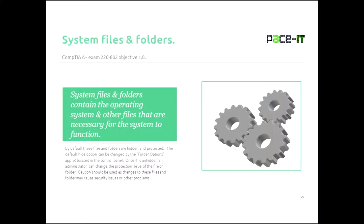System files and folders contain the operating system and other files necessary for the system to function. By default, system files and folders are hidden and protected. You can change that from the Folder Options applet in the Control Panel — go to View and click the button to unhide system files and folders. Keep in mind that if you unhide and unprotect them, you may create a security issue, so do that with caution.